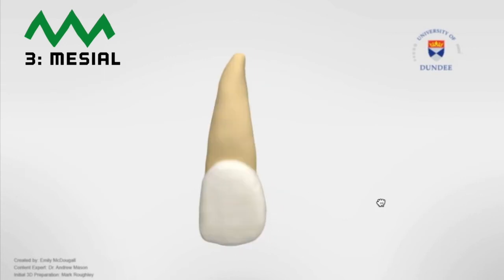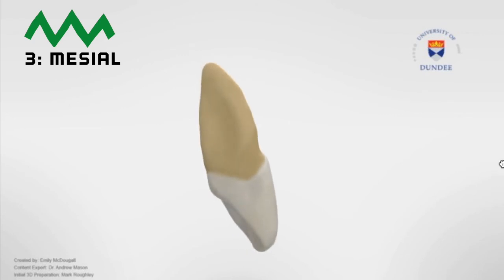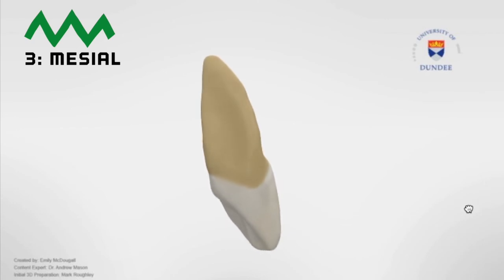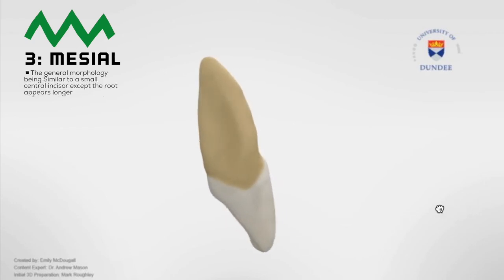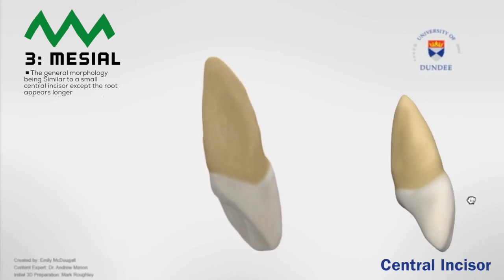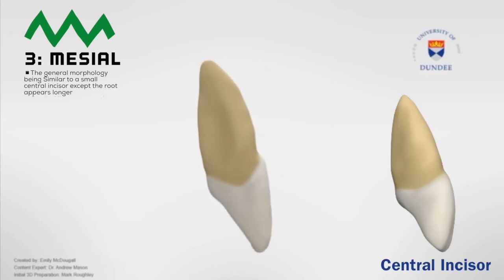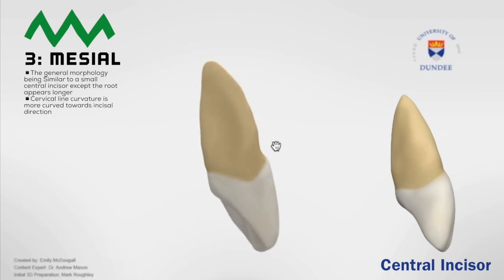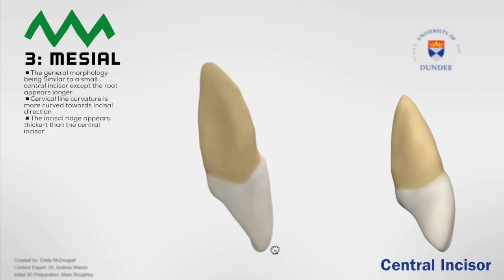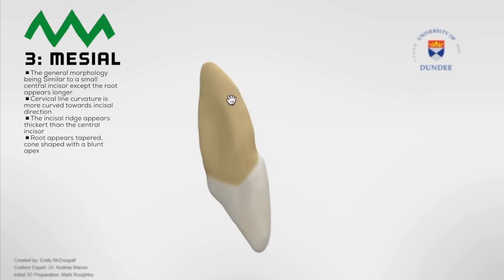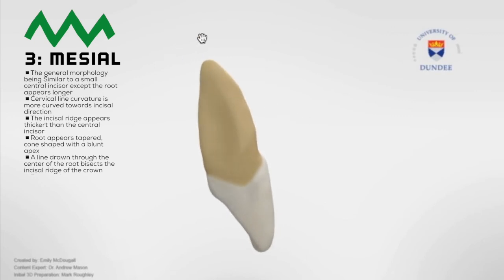Number three is the mesial view. From this direction, we can observe the portion of the tooth visible from the side closest to where the midline of the face would be. The general morphology is similar to a small central incisor, except the root appears longer. The cervical line curvature is more curved towards the incisal direction. The incisal ridge appears thicker than the central incisor. The root appears tapered, cone-shaped with a blunt apex.